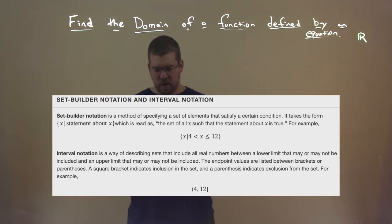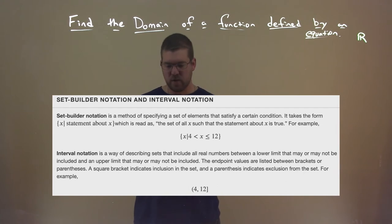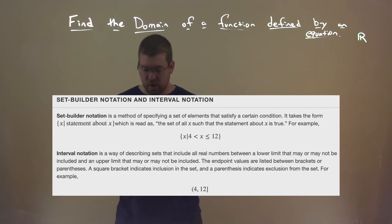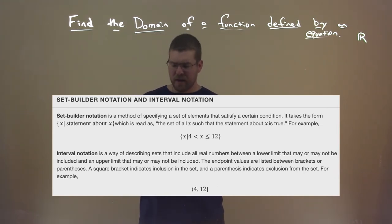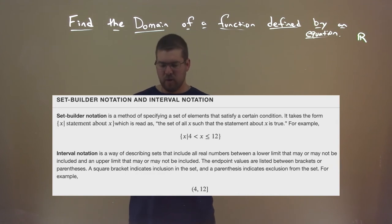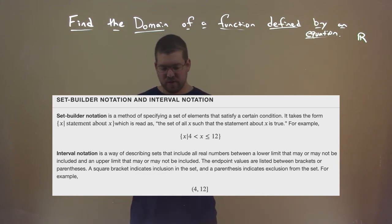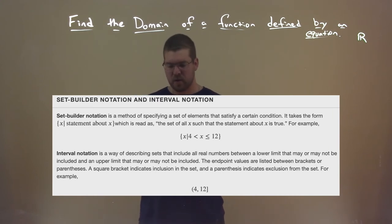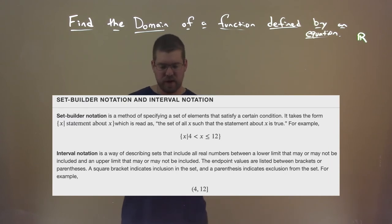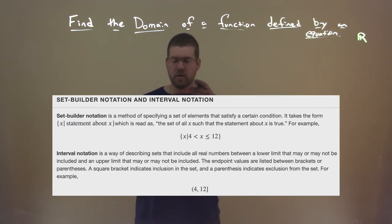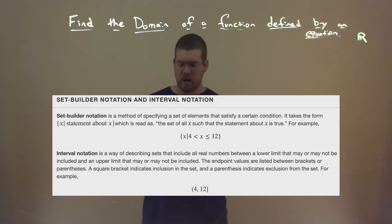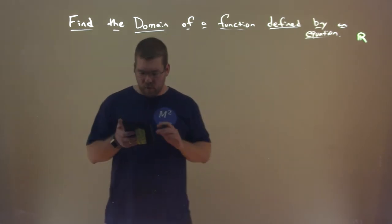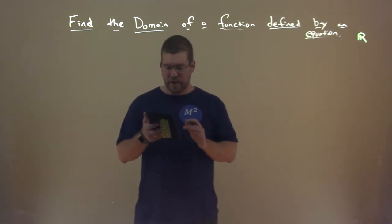Interval notation is a way of describing sets that include all real numbers between a lower limit and an upper limit that may or may not be included. The endpoint values are listed between brackets or parentheses. A square bracket indicates inclusion in the set; a parenthesis indicates exclusion. For example: parenthesis 4, comma 12 with a bracket.